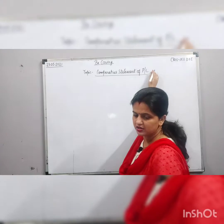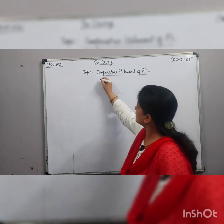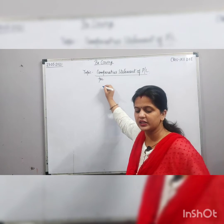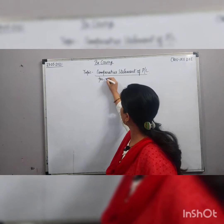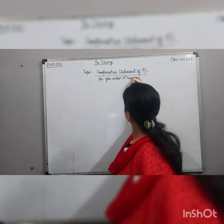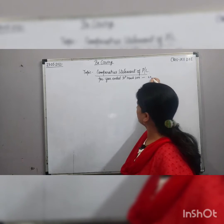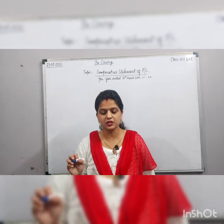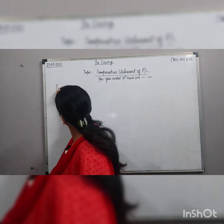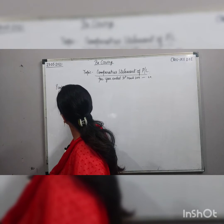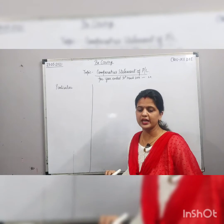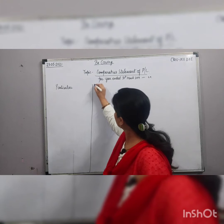First, write the heading: Comparative Statement of Profit and Loss, and below it write the year for which it is being prepared — for example, 'For the year ended 31st March 2019.' Then set up Column 1 as 'Particular,' followed by a Note Number column, just as in the balance sheet.